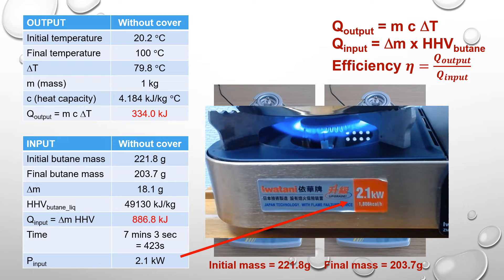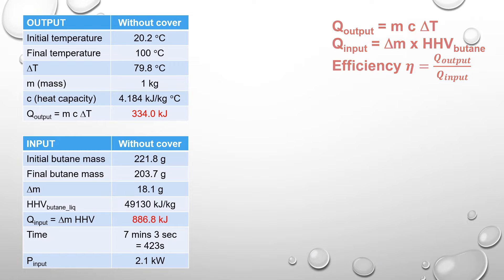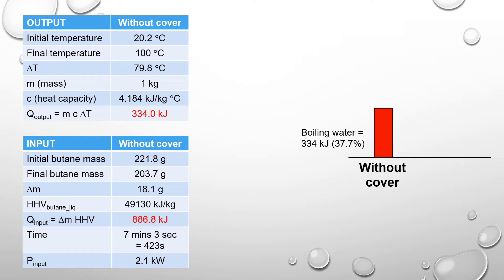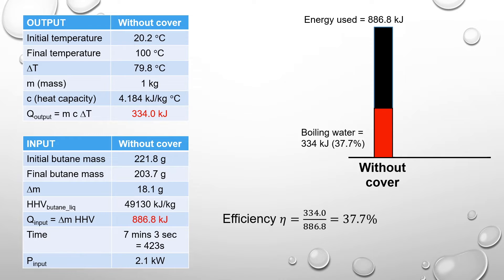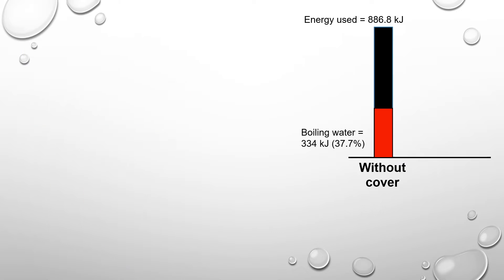Based on our results, the efficiency of the gas stove is therefore 334 kJ divided by 886.8 kJ, which is equal to 37.7%. That means more than 60% of the energy is lost somewhere. So you may ask, where is the energy lost to?